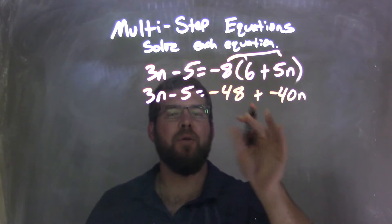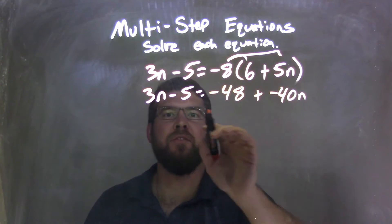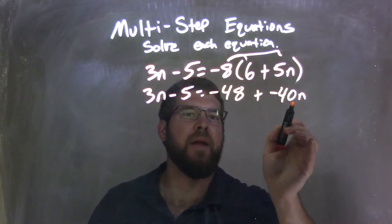And so by distributing that across, I kind of got rid of the parentheses. Now on my left side, there's no like terms. On the right side, no like terms.